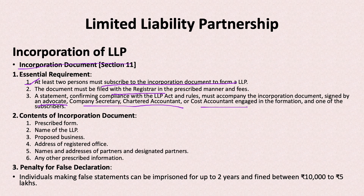What are the contents in the incorporation document — what information do we provide? First, the government gives us a form with information we fill in. Then: the name of the LLP, what business the LLP is in, the name of the registered office and its address, the name and address of designated partners, and any other required information as mentioned in the LLP Act for incorporation.